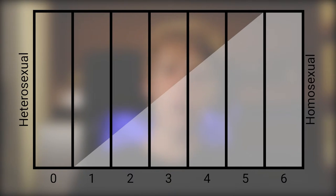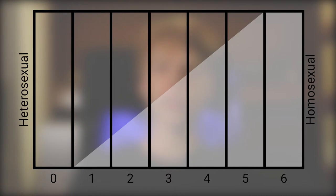A person that falls as a 5 on the Kinsey Scale is described as being predominantly homosexual, only incidentally heterosexual, while a 2 on the scale is predominantly heterosexual but more than incidentally homosexual.